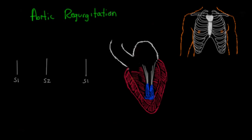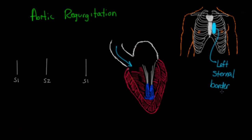Aortic regurgitation means that blood is going to be coming back through the aortic valve when it's supposed to be closed. This is a little counterintuitive — you would think aortic regurgitation would be heard at the aortic area, but because the blood is coming back the other way, we actually listen along the left sternal border. Why would you listen in the normal aortic area when the blood is traveling in the other direction?